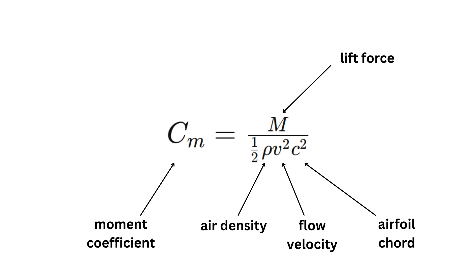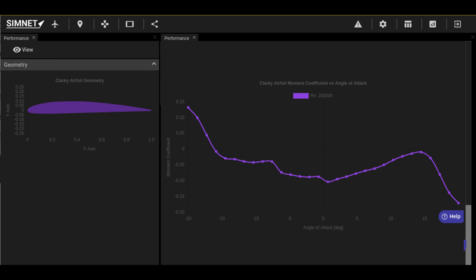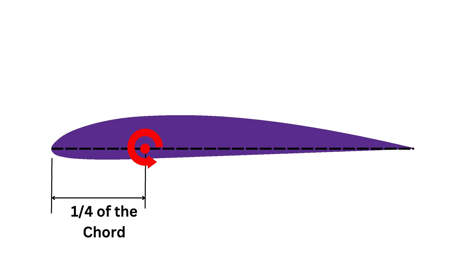Like the lift and drag, the moment is also expressed through the airfoil moment coefficient. This is how the moment coefficient looks for the Clark Y airfoil. Notice that it has a negative value over a large part of its angle of attack range, meaning it produces a pitch down moment. Unlike the lift and drag coefficients, the value of the moment coefficient varies depending on the point around which it is measured. It is customary to measure the moment coefficient around the point located along the cord line, one quarter of the way from the leading edge to the trailing edge of the airfoil.